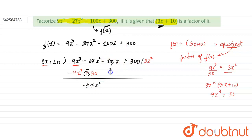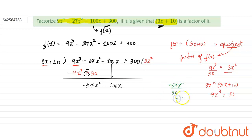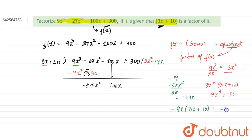Then minus 100z comes down. Now, again taking the first element of this and the first element of the factor, we get the second element of the quotient. So we have minus 57z square divided by 3z, which equals minus 19. So the second element is minus 19z. We take minus 19z and multiply it with the factor 3z plus 10, giving minus 57z square minus 190z. So we write here minus 57z square minus 190z.